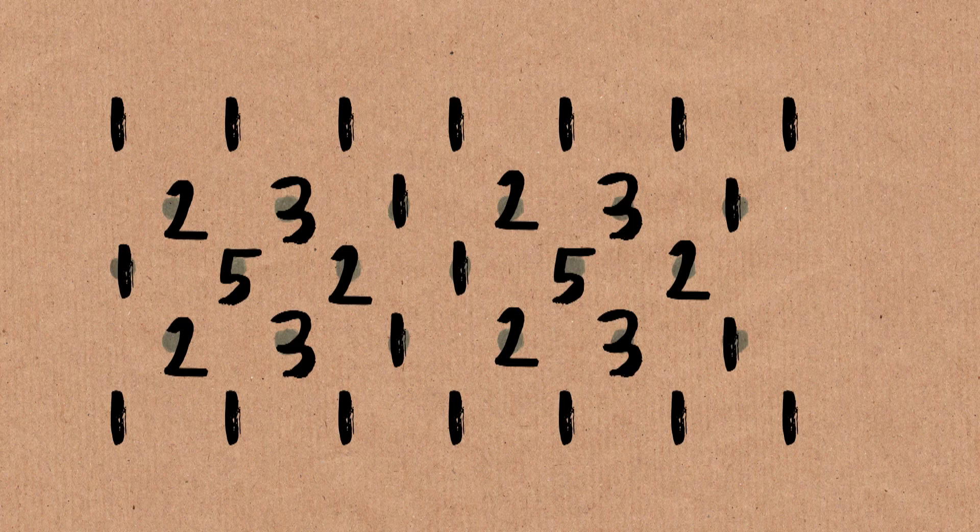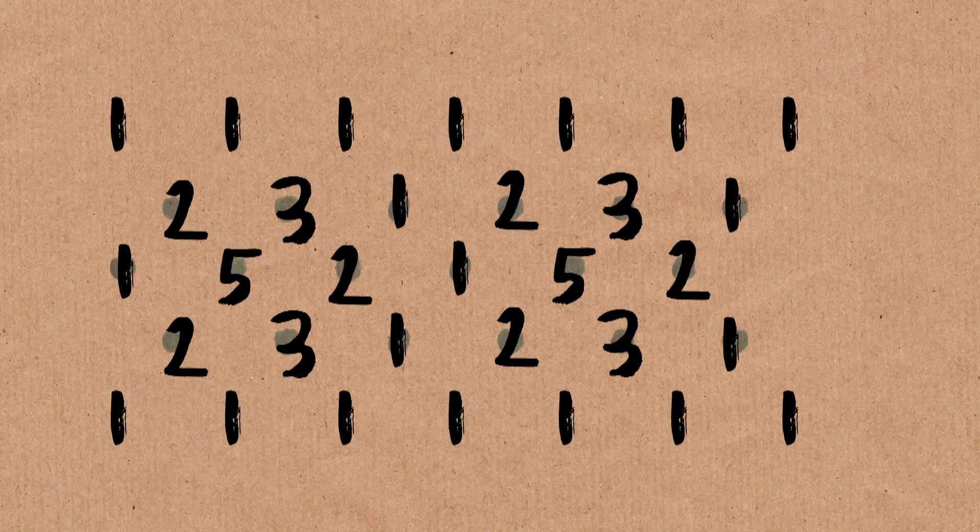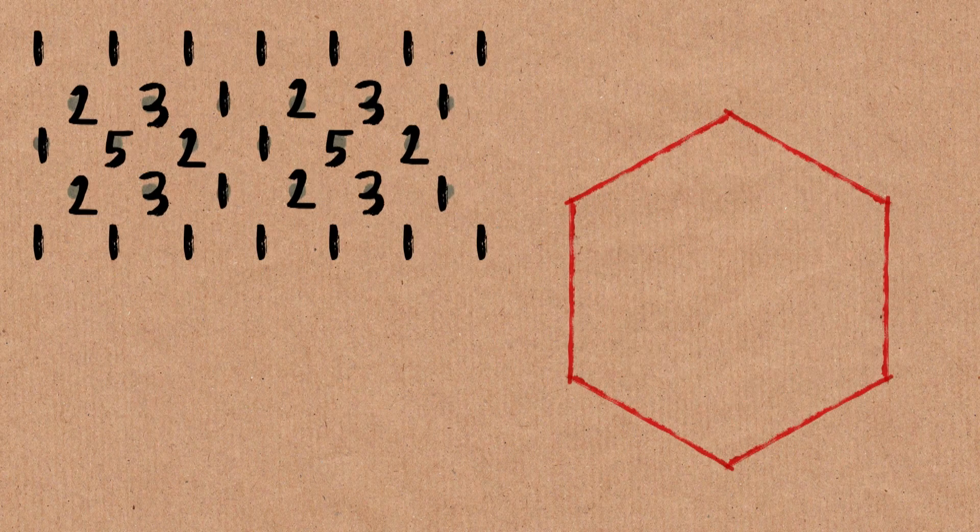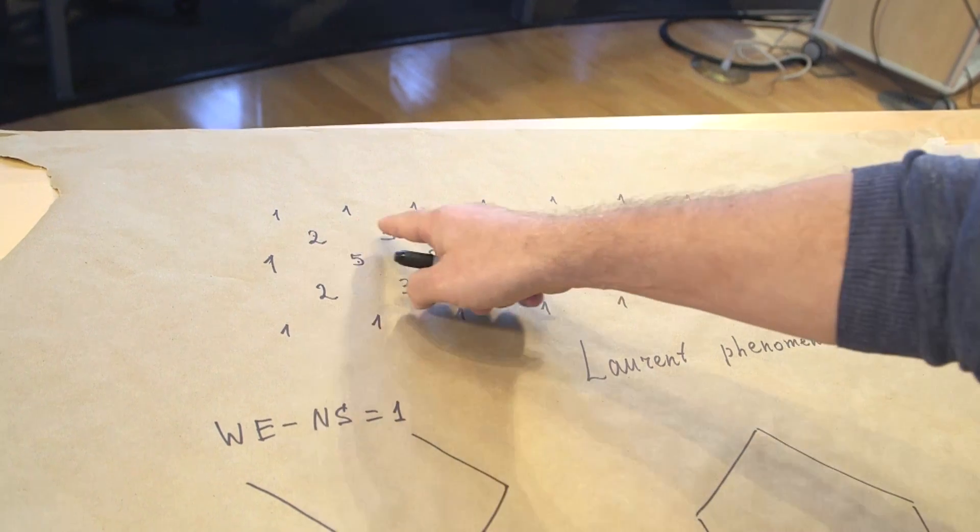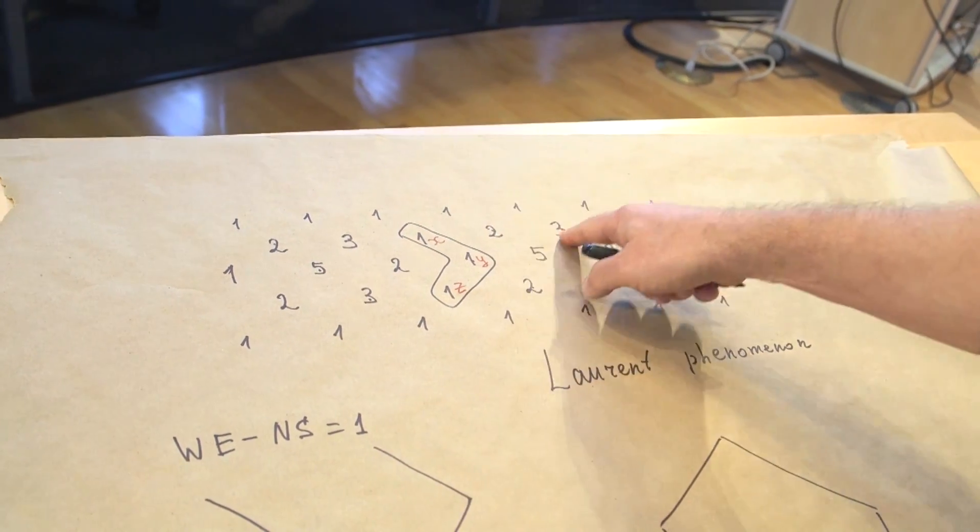Alright, so first of all, we need to figure out what is n-gon. Here, there are 3 non-trivial rows, so it should be 6 hexagons. I didn't prepare this, so I may fail. 2, 3, 1, 2, 3, 1.